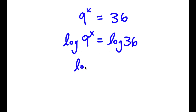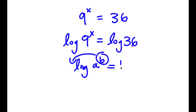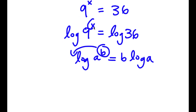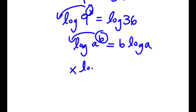Now, if I have something in the form log a to the power of b, I can move this exponent b to the front, so it equals b times log a. So in this case, I have log 9 to the power of x, and I can move x to the front. So now I have x times log 9 is equal to log 36.